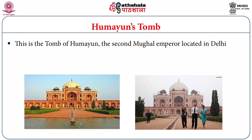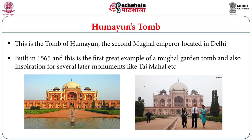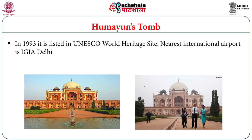Humayun's Tomb is one of the oldest World Heritage Sites in the country. The tomb of Humayun, the second Mughal emperor, is located in Delhi. It was built in the year 1565 and is popular for its garden tomb design. It was also an inspiration for several later monuments like the Taj Mahal. It was declared as a World Heritage Site in the year 1993 and is close to Indira Gandhi International Airport, Delhi.